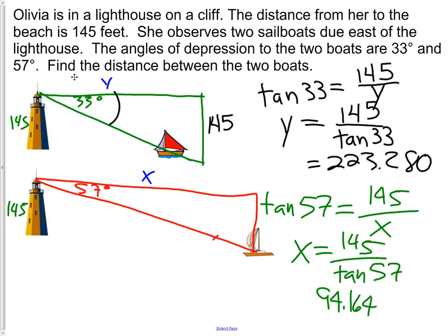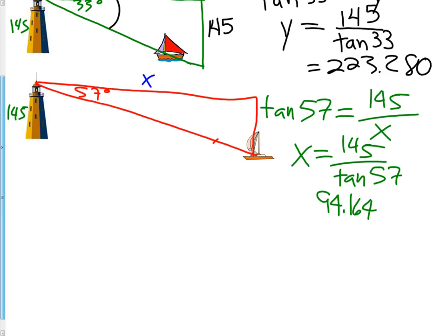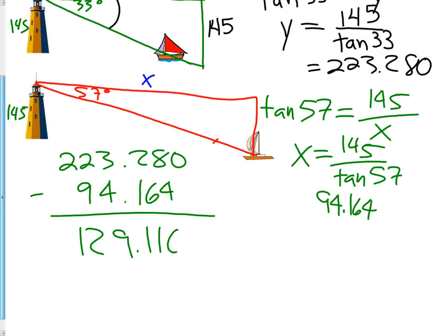Now let's see if we can answer the question. What is the distance between the two boats? To do that, all we need to do is subtract how far they are from her. We know that the first boat is 223.280 away from her. The second boat is 94.164 away from her. So if we subtract those, 223.280 minus 94.164, we get 129.116 feet. So those two boats are about 129 feet apart.